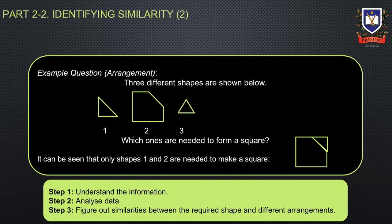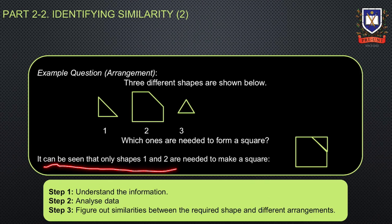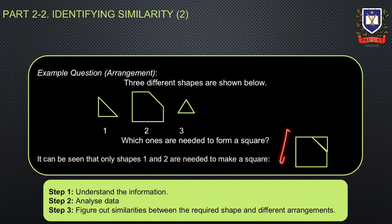Consider the following example. Three different shapes are shown below — which ones are needed to form a square. It can be seen that only shapes one and two are needed to make a square, and they can be rotated and tessellated as shown.